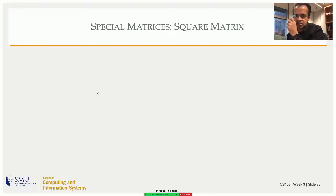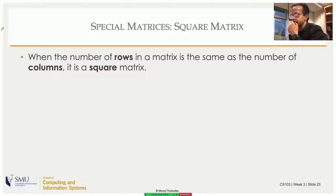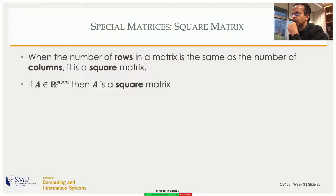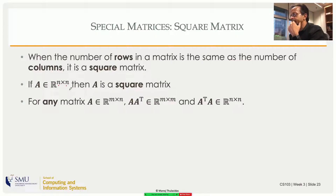Let's look at some matrices with special properties, either in the shape or the nature of the elements. The first one is a square matrix: when the number of rows is the same as the number of columns, it's a square matrix — written as R n by n. Those two dimensions are the same, meaning it's a square matrix with three rows.